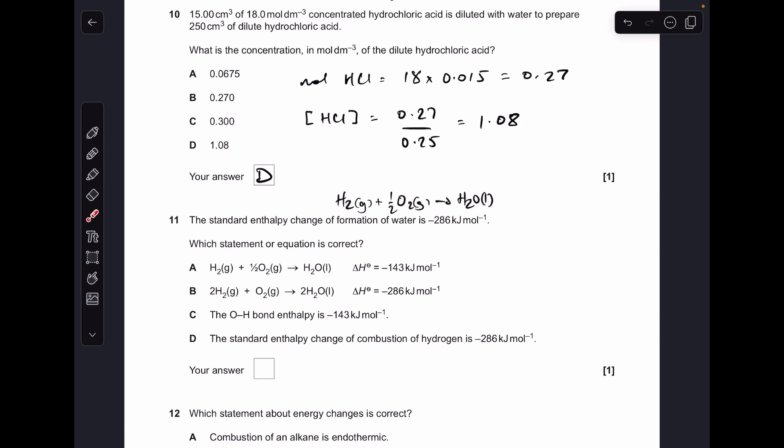Number eleven. You can see I've written up the equation that represents the standard enthalpy change of formation of water—one mole of water formed from its elements in their standard states. You can see that equation A is correct but the value's half of what it should be, so A is wrong.